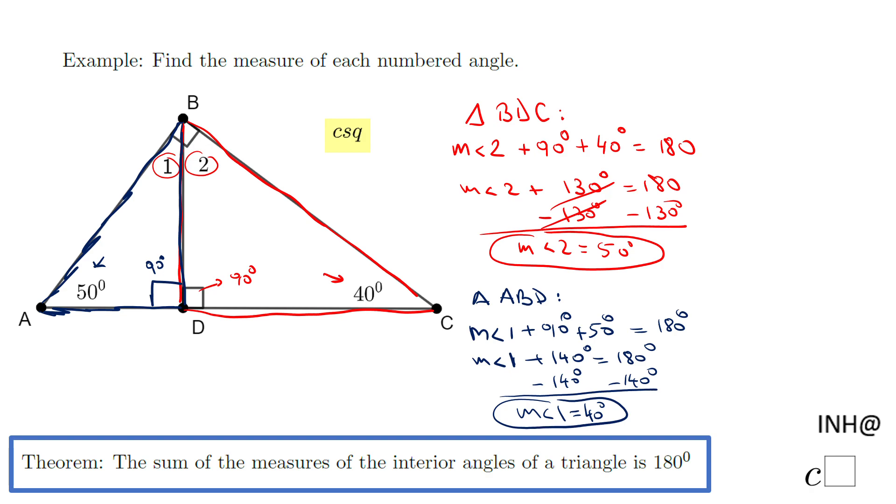However, this problem can be solved in a different way. If you take a look, these are right triangles. So if both triangles are right triangles, which means these angles are complementary, you can approach it this way also.